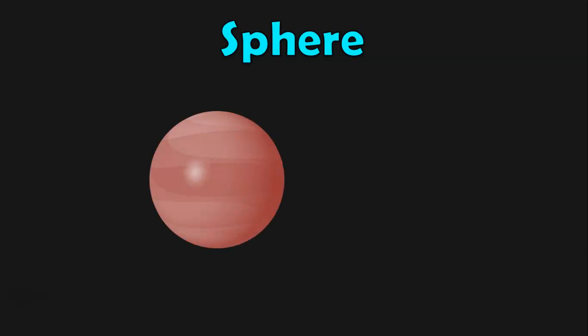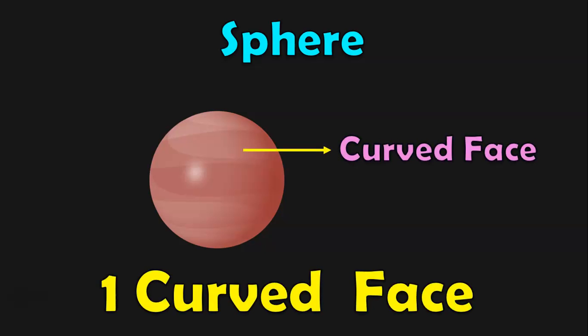Next, let us look at a solid shape that has only a curved face. This is a sphere. Does it have a flat face? No, a sphere has just one curved face.